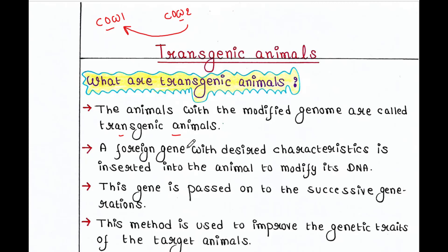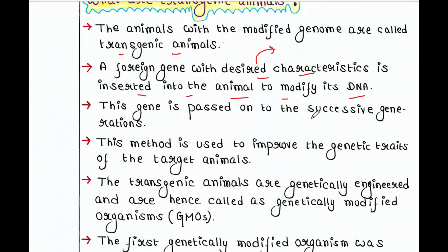So a foreign gene with desired characteristics is inserted into the animal to modify its DNA. In our example, the desired characteristic was to produce more protein-enriched milk. This gene is passed on to successive generations. This method is used to improve the genetic traits of the target animals. Transgenic animals are genetically engineered and are hence called genetically modified organisms, or GMOs.